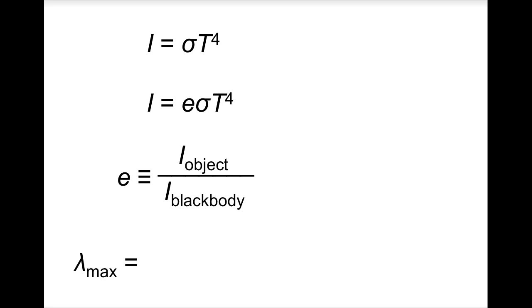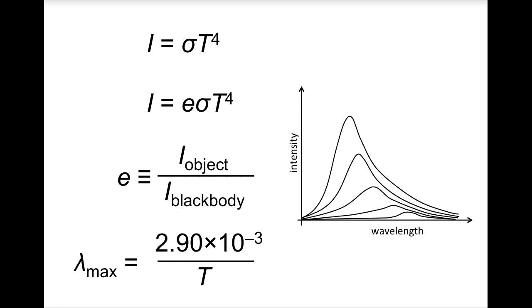The maximum wavelength, which is radiated most intensely, is inversely proportional to the object's temperature. And the constant of proportionality is this. Remember, that's what shows that the peaks get farther left when the object heats up.